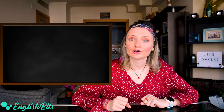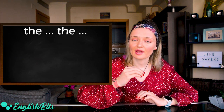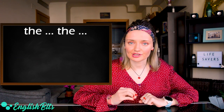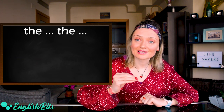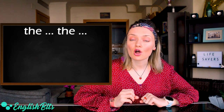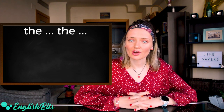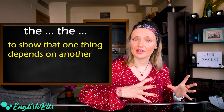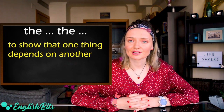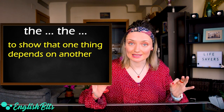So let's begin with our first grammar structure, which is 'the + comparative adjective or adverb + the + same comparative adjective or adverb.' We use this grammar structure to show that one thing depends on another. Now let's look at some short sentences.